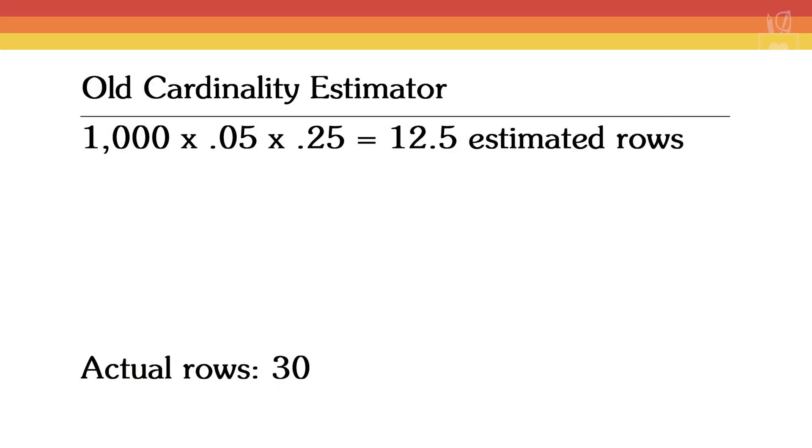Let's say we've got a user profile table with information about 1,000 users, including columns for their favorite artist and favorite music genre. We would see 250 people out of the 1,000 like jazz as their favorite genre, and 50 people like Oscar Peterson, a jazz pianist, as their favorite artist. The old cardinality estimator assumes those two predicates have nothing to do with each other — no correlation — so the estimate is formulated as: 1,000 rows times the 5% chance they like Oscar Peterson times the 25% chance they like jazz music, giving an end result estimate of 12.5 rows.